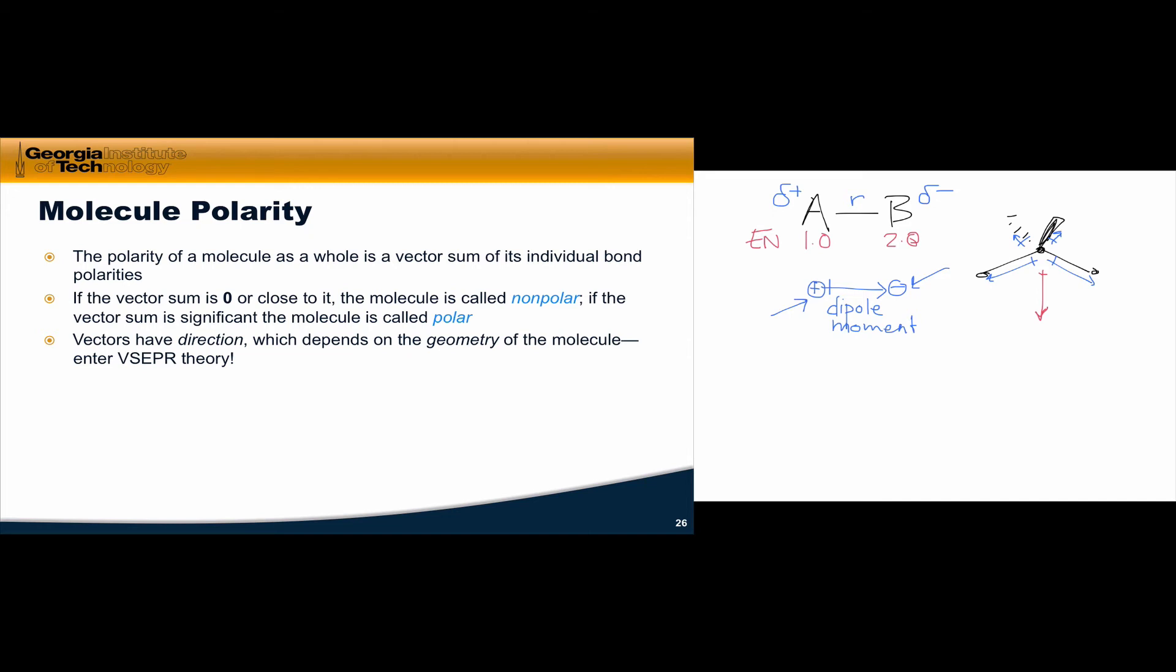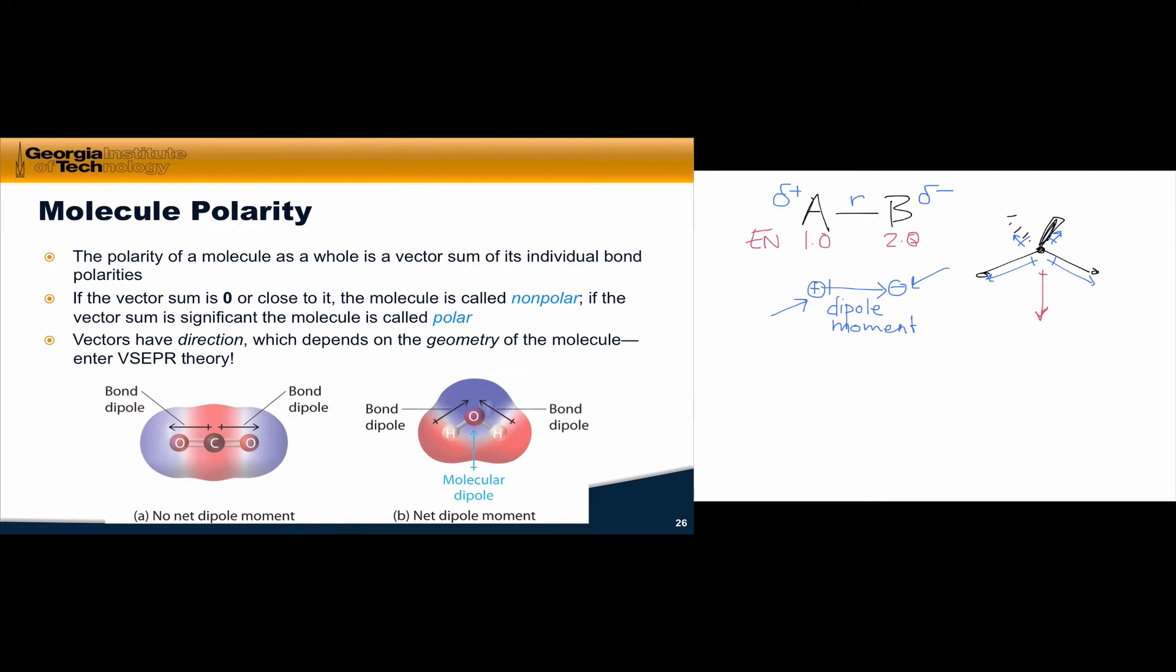So here are a couple of nice examples. On the left, we have CO2. CO2 has two equivalent carbon-oxygen bonds, with bond dipoles that point outwards toward the more electronegative oxygen atoms. That should make intuitive sense.